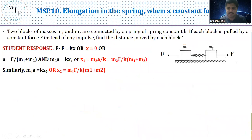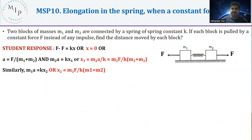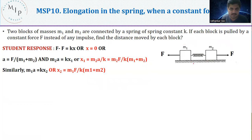Now, in this new problem, there is no initial velocity. I am applying a constant force on this side and a constant force on the other side — pulling both objects outward. The masses are not the same; this could be 1 kg and this could be 10 kg. The question is: what is the distance moved by each block?